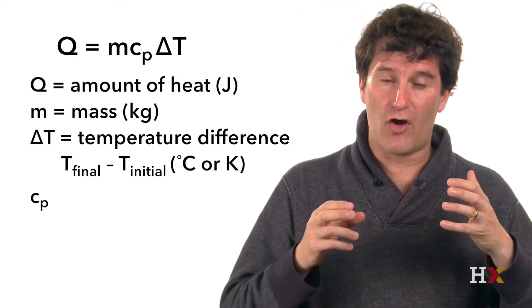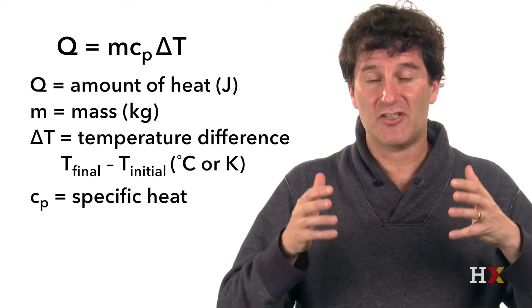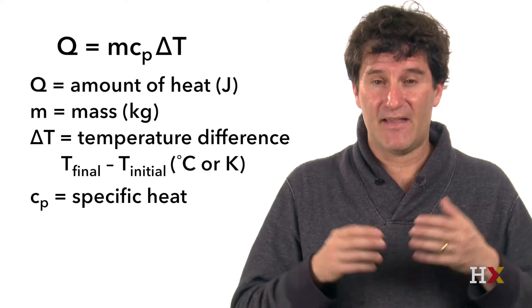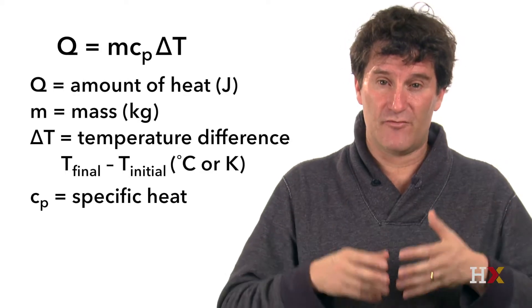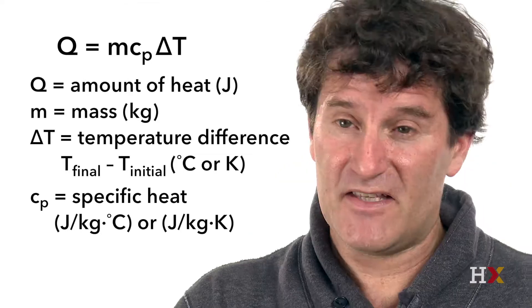And finally, c_p is a number that we call the specific heat of a material. It is the number that characterizes how much something heats up when you apply a specific amount of heat. And it is measured in the units of joules per kilogram per degree Celsius or degree Kelvin.